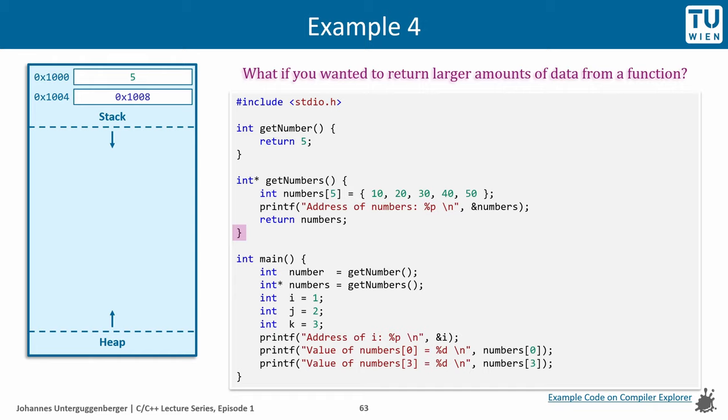Back in main, we got the address of the array returned regardless of the fact that it was only valid within the getNumbers function. The address is assigned to a pointer variable and stored on the stack. Three more variables are created and put on the stack.